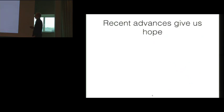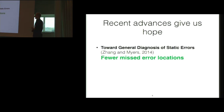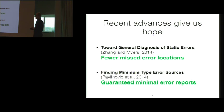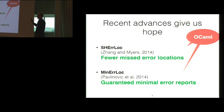This is a difficult problem to solve, but fortunately, there's good news. There have been some recent advances that give us hope that we can actually address this problem. Compilers can give us good error messages. So in 2014, Zhang and Myers presented a tool that found far fewer missed error locations on OCaml programs than the OCaml compiler. And that same year, Zvonimir Pavlinovich also showed that we can produce error reports that are guaranteed to be minimal. They explain all of the type errors in the code with the smallest number of messages to the user, which is a great property to have. Both of these approaches were specialized to OCaml. Going forward, I'm going to be referring to them by the names of the tools, which are Sherlock for the first one and Minlock for the second one.